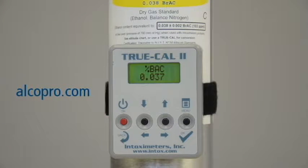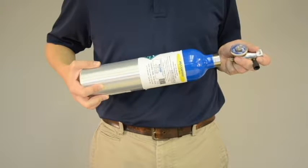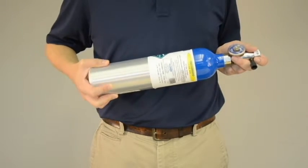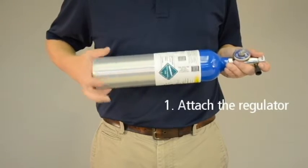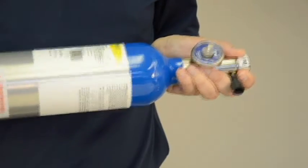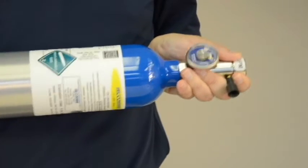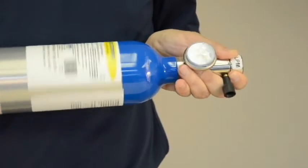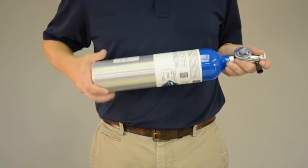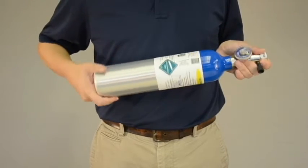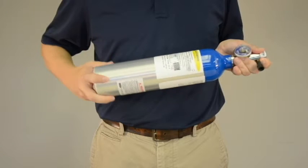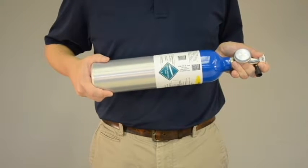Now that you know your expected gas value, you can proceed with the accuracy check. First, attach the regulator to the dry gas tank. For safety purposes, point the regulator end of the canister away from your body and away from others. Twist the regulator securely in place, making sure you don't over-tighten. You may hear a pop or hiss sound as you tighten the regulator. This is normal.